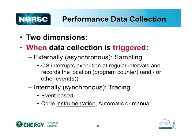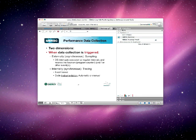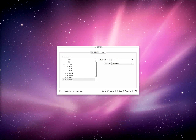Two ways of triggering the data analysis: asynchronously or synchronously. With asynchronous collection, you run the code and periodically the operating system interrupts your code extremely briefly and does some measurement — it's totally out of your code's control when it happens. It's very easy to do, very low overhead, and sometimes a useful way of doing this. You don't need to know anything about your code in order to do this type of analysis.